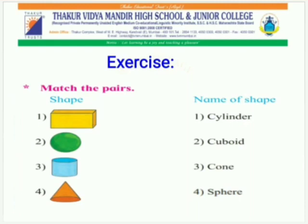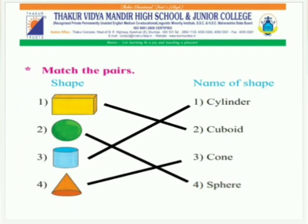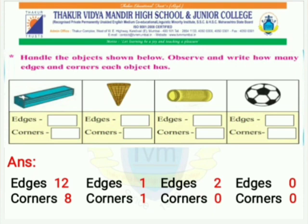Now, let's start with some exercises. Take your pencil, eraser, and books in your hand. Children, match the shapes with their names: cuboid, sphere, cylinder, and cone. Very good — now match it. Next, let's find out how many edges and corners each object has. The first object is a mouth organ: it has 12 edges and 8 corners. An ice cream cone has one edge and one corner. A battery has two edges and zero corners. And a football has zero edges and zero corners.